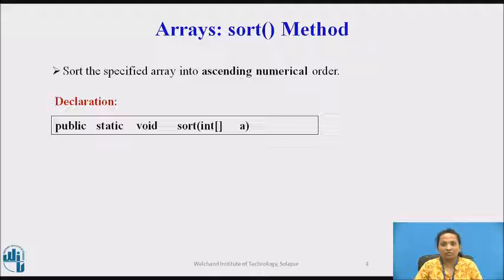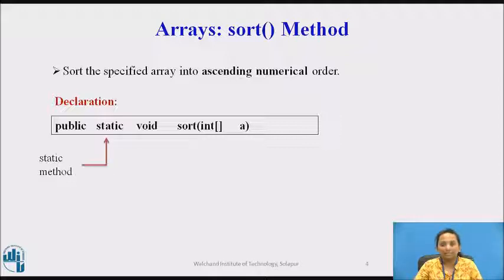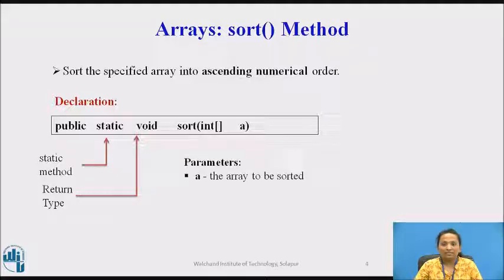The Arrays class in the java.util package contains a sort method which sorts the specified array into ascending numerical order. The sorting algorithm used is typically a dual-pivot quicksort, which offers O(n log n) performance on many data sets that cause other quicksorts to degrade to quadratic performance. This is typically faster than traditional one-pivot quicksort implementations. The sort method is a public static method, accessible using the class name itself. The return type is void, and one parameter — the integer array to be sorted — is passed to this method.